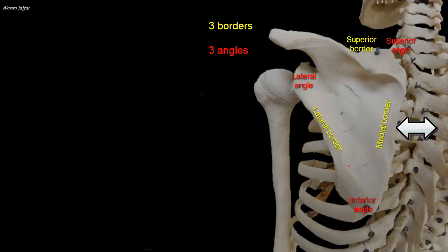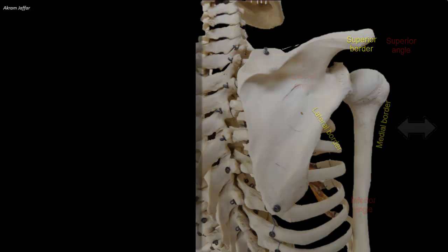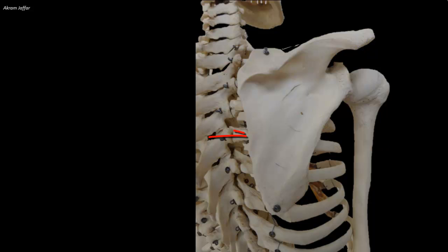Hence, the medial border is often called the vertebral border. It is palpable inferior to the root of the spine of the scapula.